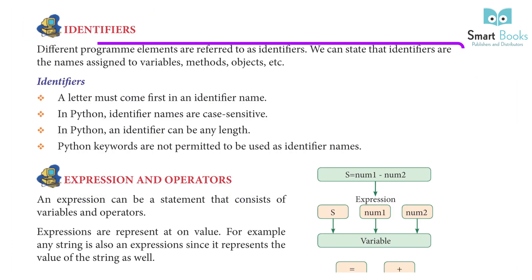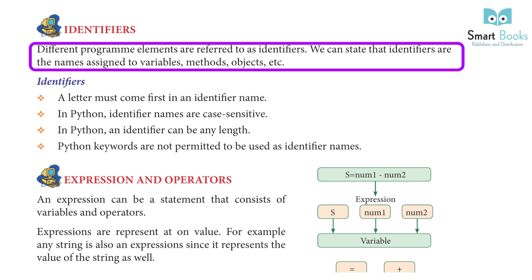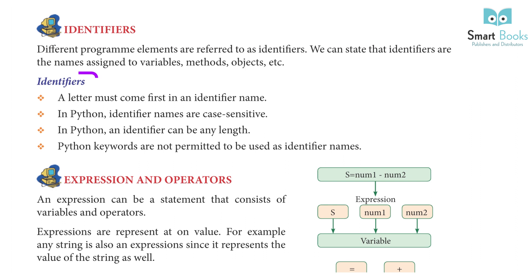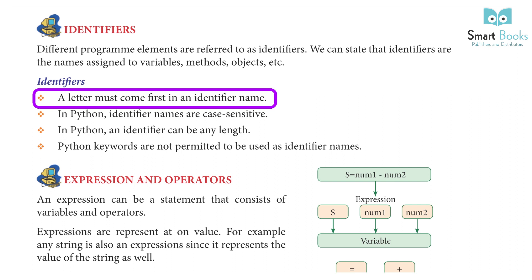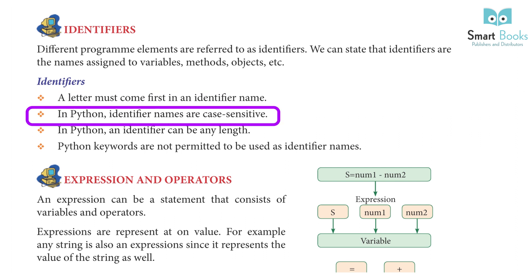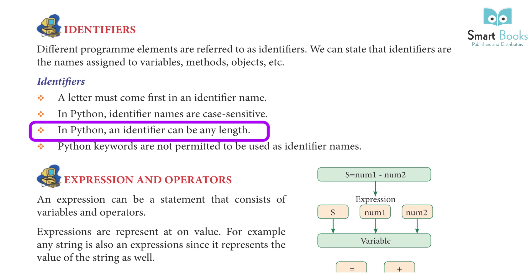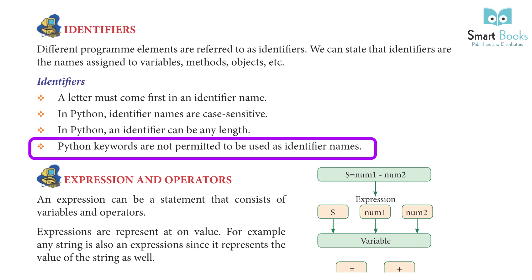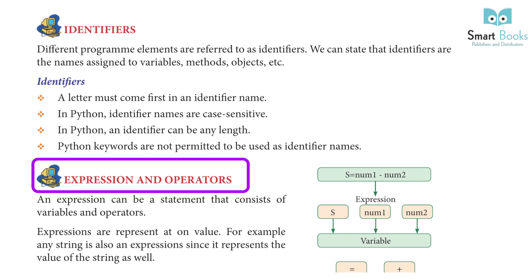Identifiers: Different program elements are referred to as identifiers. We can state that identifiers are the names assigned to variables, methods, objects, etc. In Python, a letter must come first in an identifier name. Identifier names are case-sensitive in Python, and an identifier can be any length. Python keywords are not permitted to be used as identifier names.